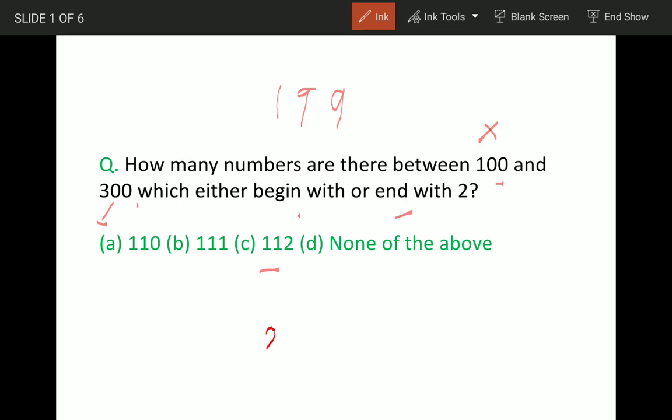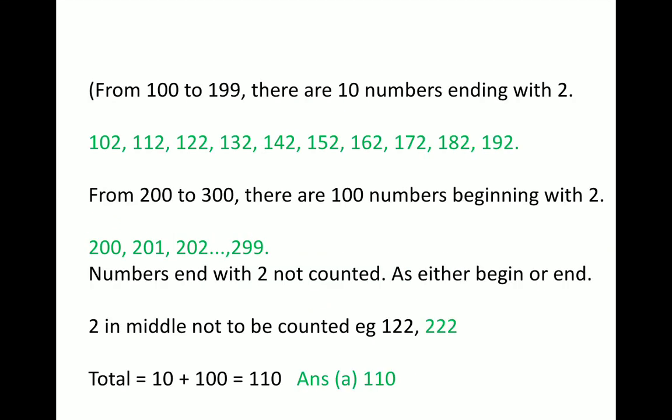Begin or end means if we have 222, this will be counted only as 1 because it is begin or end, and in between we are not counting. So see the solution.